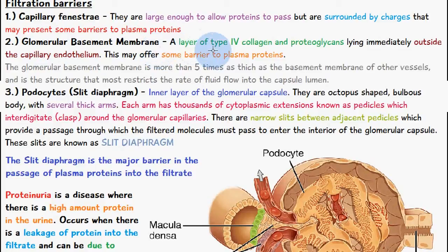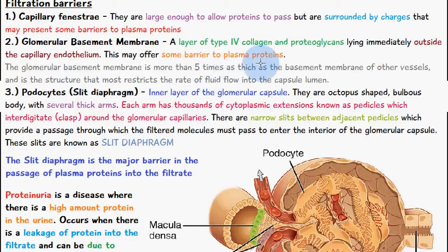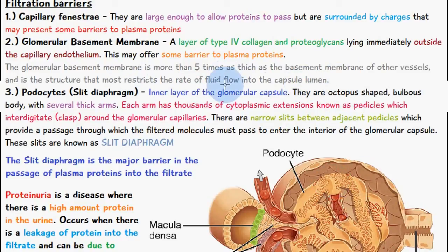The second filtration layer is the glomerular basement membrane. This is a layer of type 4 collagen and proteoglycans lying immediately outside the capillary endothelium, and it may offer some barrier to plasma proteins. The glomerular basement membrane is more than five times as thick as the basement membrane of other vessels and is the structure that most restricts the rate of fluid flow into the capsule lumen.